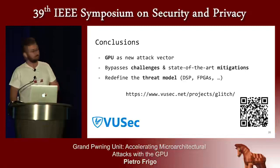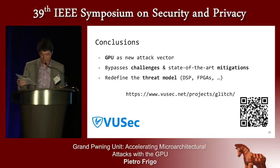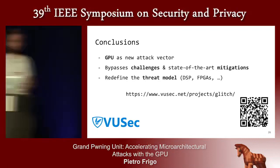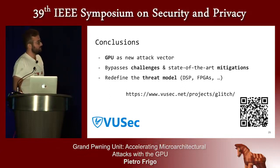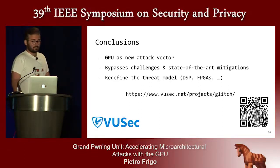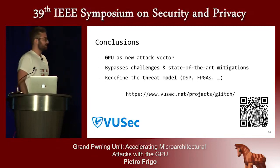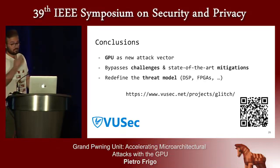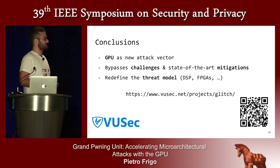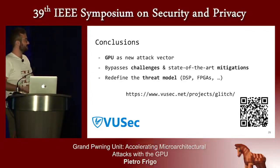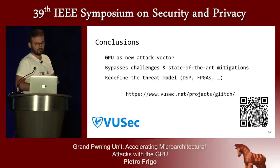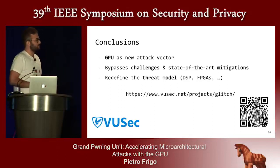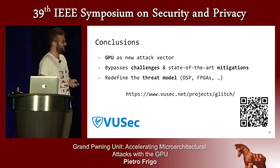Thanks Pietro. If you have questions please approach one of the microphones and state your name and affiliation. One question: in your paper you discuss plans for mitigations — could you tell us a bit more about what's in store and your experiences with manufacturers? As of now, we suggest disabling timers as a short-term mitigation, but we don't believe that's a long-term solution because timers were disabled before and we found a new one. For rowhammer itself there is no solution as yet, and we've been talking with Google on possible mitigations but can't discuss the details now.